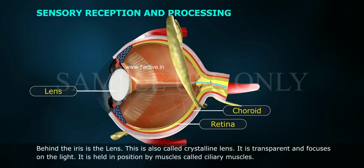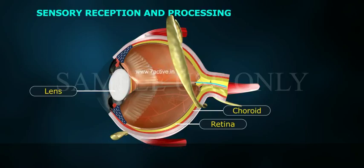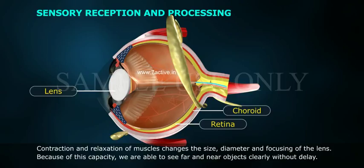Behind the iris is the lens, also called the crystalline lens. It is transparent and focuses light. It is held in position by muscles called the ciliary muscles. Contraction and relaxation of these muscles changes the size, diameter, and focusing of the lens, which allows us to see far and near objects clearly without delay.